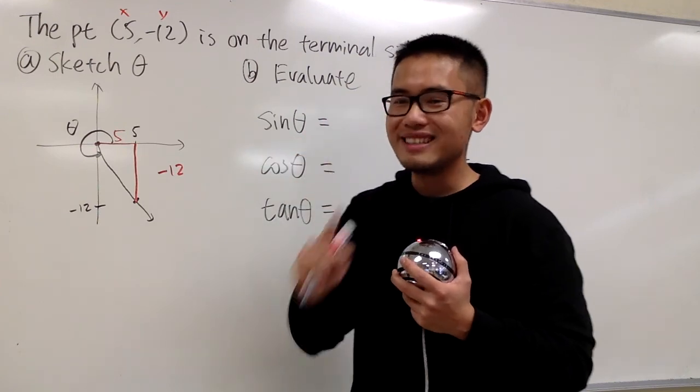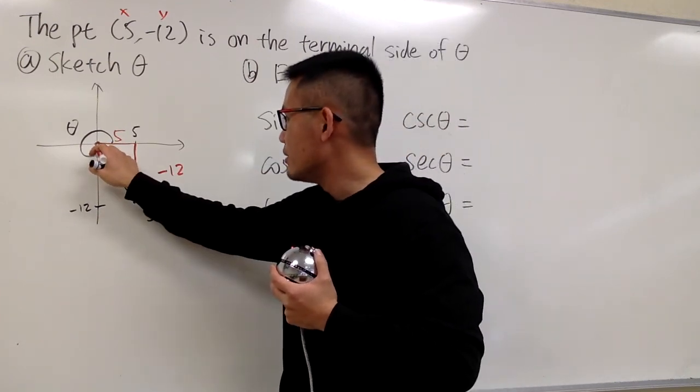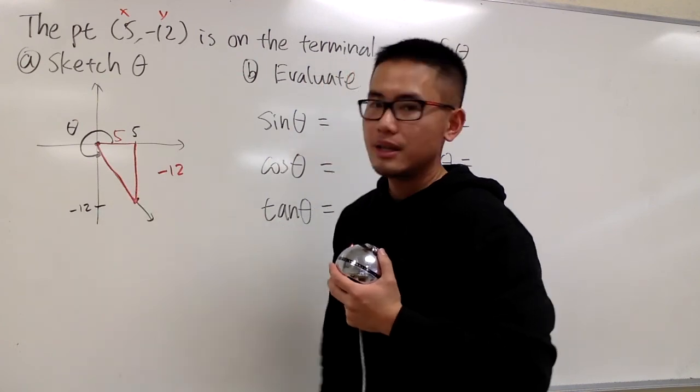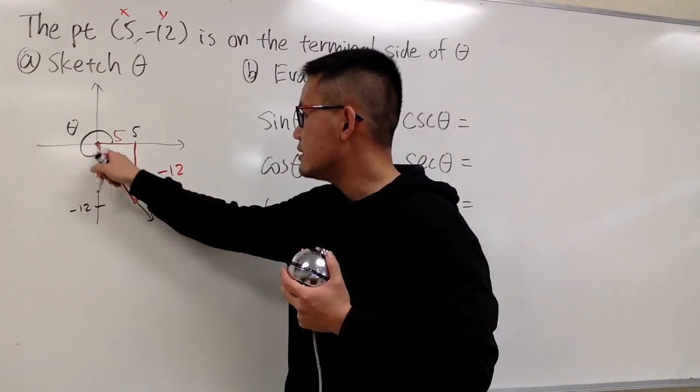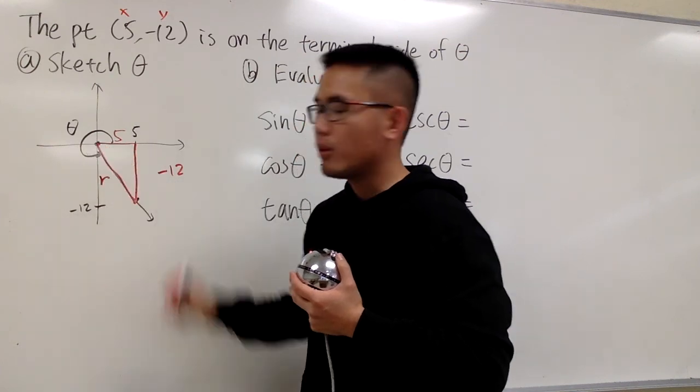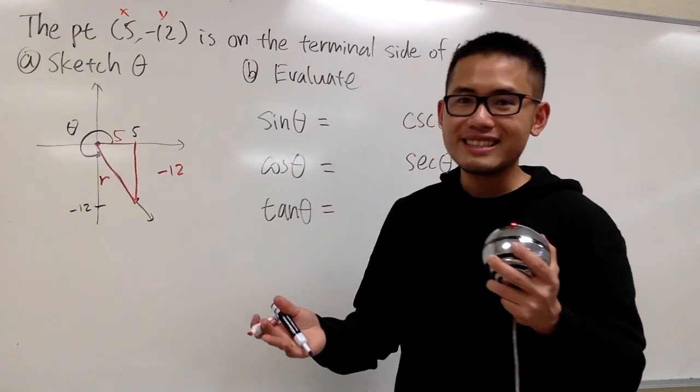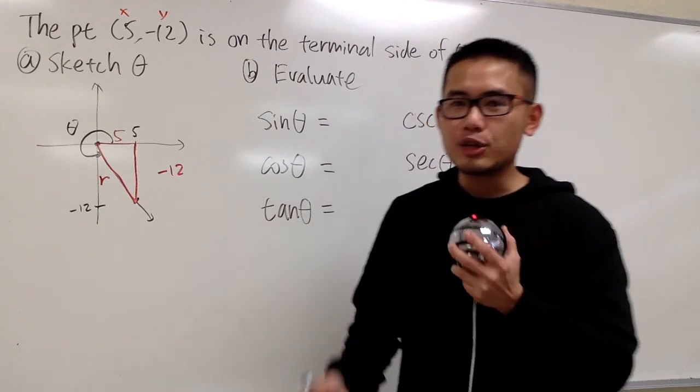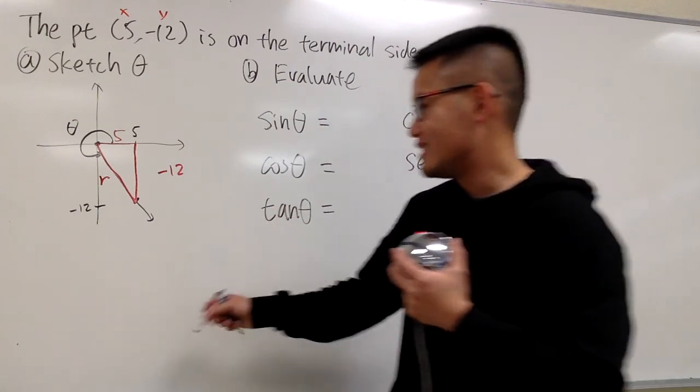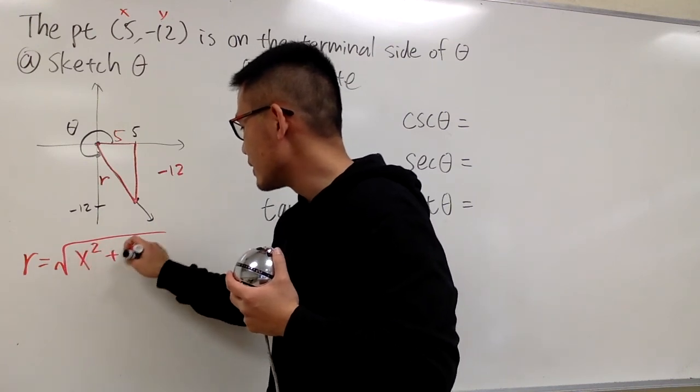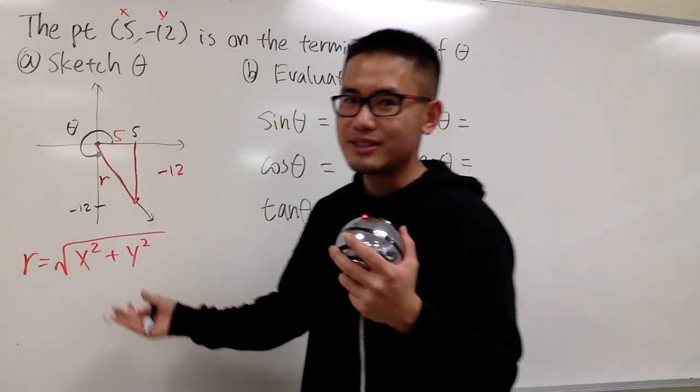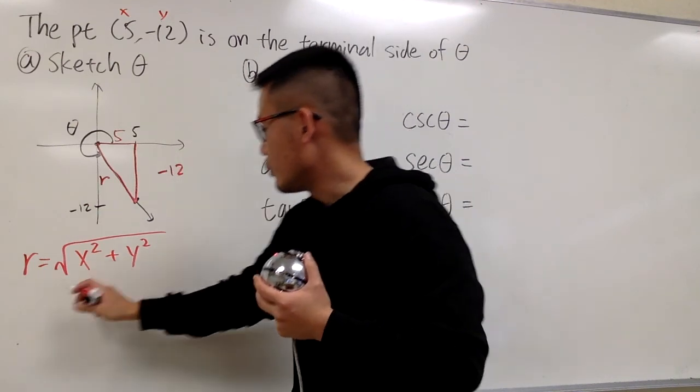But one more thing that we need. We also need to know the hypotenuse from here to here of this right triangle. And in this situation, we'll label this as r, the distance from the origin to this point. And we have a formula for that. It's pretty much just the Pythagorean theorem, but we have the formula. It's just r equals square root of x squared plus y squared. And let's just go ahead, put everything in, and work this out.